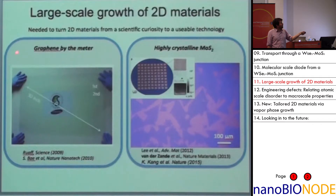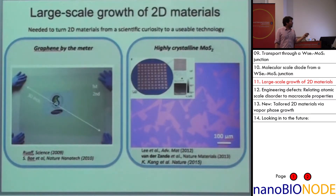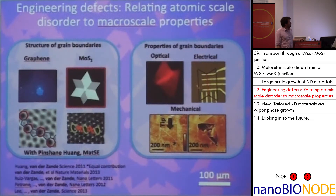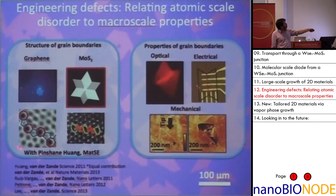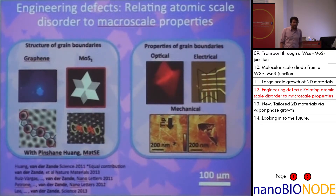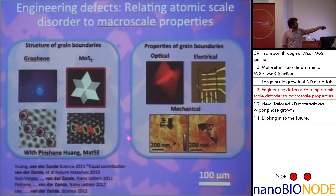Over the last few years, we've been working on different methods for large-scale synthesis of these materials. This has been very successful with graphene — people are growing graphene by the meter. We've also had success growing single-layer materials like molybdenum disulfide. One thing that's very important is that often it's the defects which dominate behavior, not the intrinsic regions of the material. We've been studying what atomic-scale defects do and how they impact material properties. Because 2D materials are atomically thin, we can put them inside a TEM and get single-atom imaging of the defect structures — here you can see a grain boundary in graphene and a grain boundary in molybdenum disulfide, atom-by-atom. Once we know where those defects are, we can directly relate them to optical, electrical, and mechanical properties.